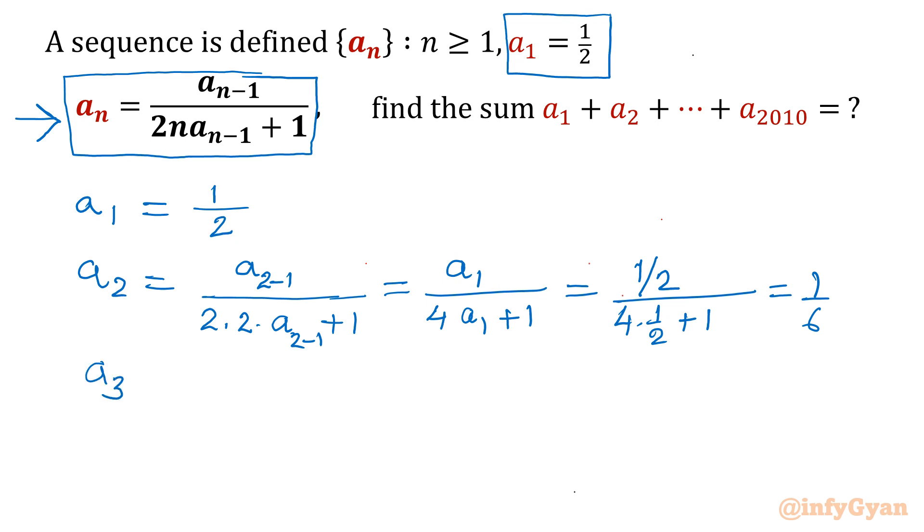a3 would be a2 over 2 times 3 times a2 plus 1. Put the value of a2: 1/6 over 2 times 3 is 6 times 1/6 plus 1. So this value is coming out 1/12.